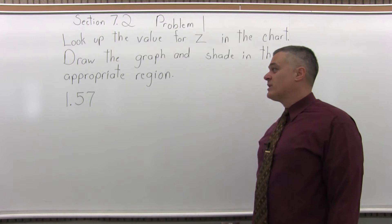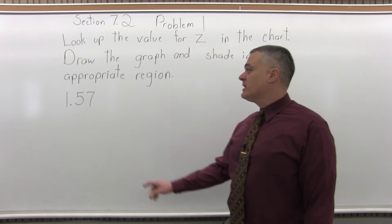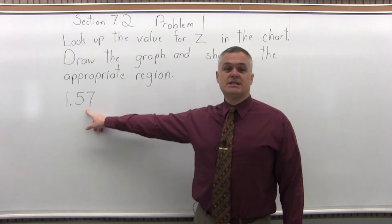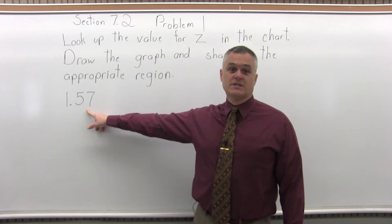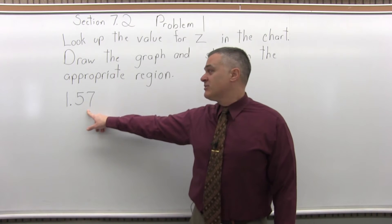So all we have to look up is 1.57. It's a four step process to look it up. Step 1: write the number to look up so that it has two places after the decimal, either add in zeros or round it off as necessary. It already has two places after the decimal, so step 1 is done.